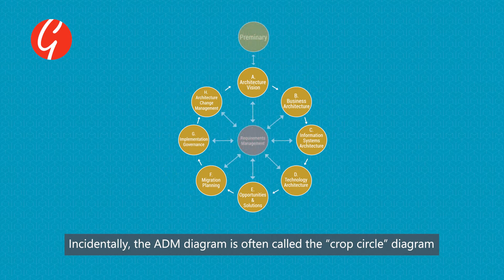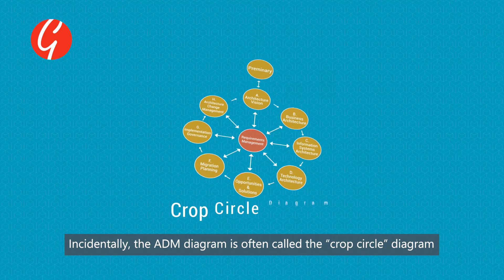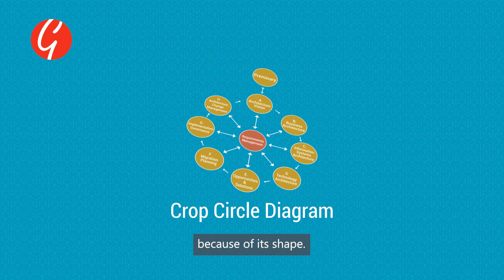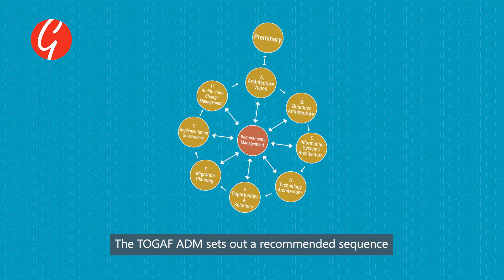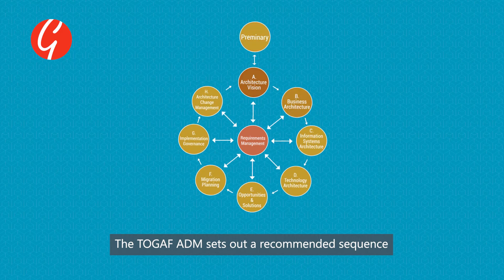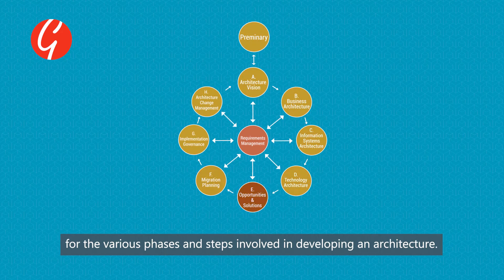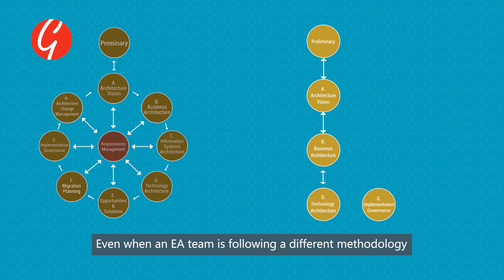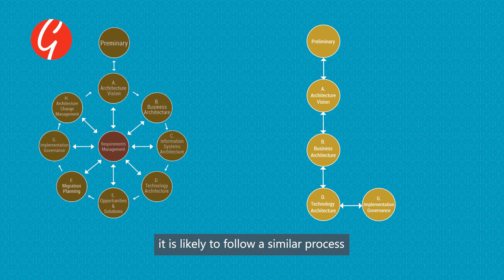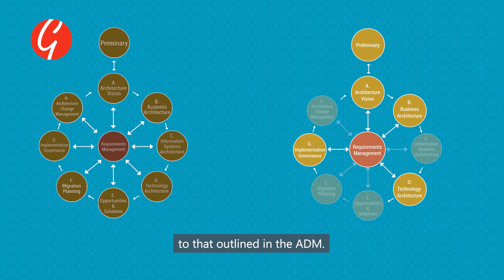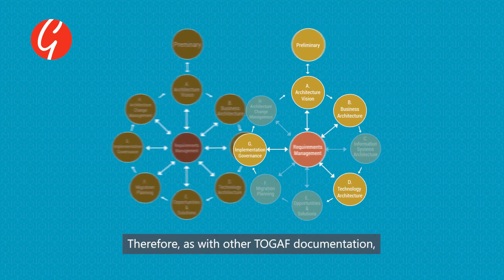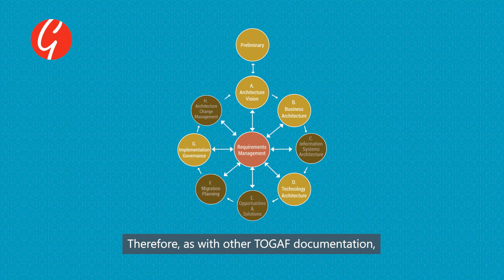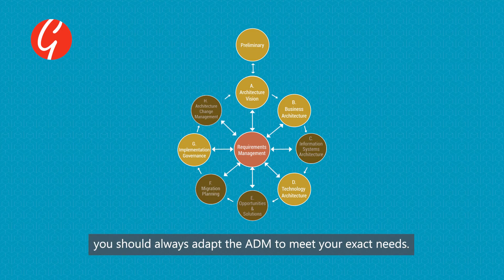Incidentally, the ADM diagram is often called the crop circle diagram because of its shape. The TOGAF ADM sets out a recommended sequence for the various phases and steps involved in developing an architecture. Even when an EA team is following a different methodology, it's likely to follow a similar process to that outlined in the ADM. Therefore, as with other TOGAF documentation, you should always adapt the ADM to meet your exact needs.